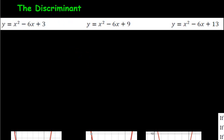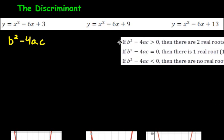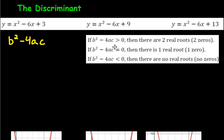Let's use b² - 4ac to find out how many roots a quadratic equation has. Remember a quadratic equation looks like a parabola. If b² - 4ac is greater than zero, there are two real roots. If b² - 4ac equals zero, there's one real root — the parabola just touches the x-axis and goes back up. If b² - 4ac is less than zero, there are no real roots at all.